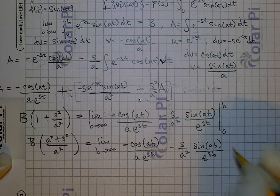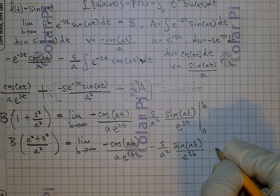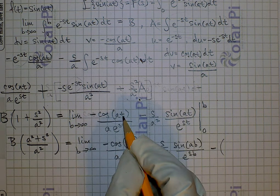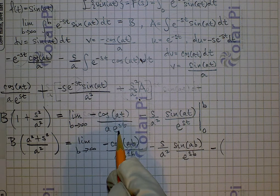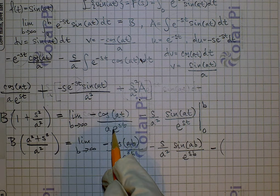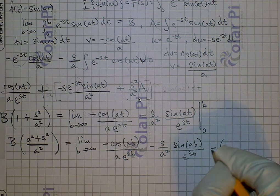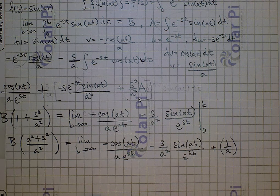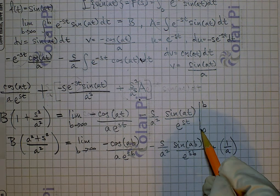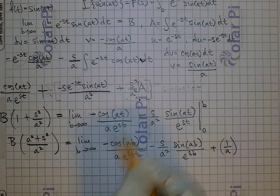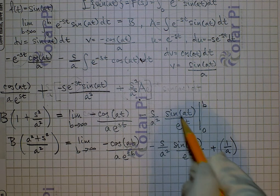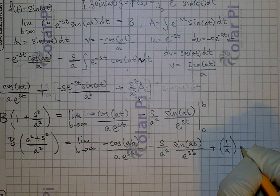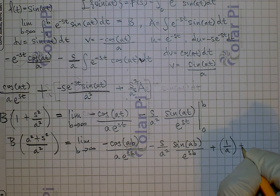Now we plug in zero and subtract. When we plug in zero, we get negative cosine of zero, which is negative one over a times e to the zero — so we get negative one over a. But we have this negative sign, so we write plus one over a. Plugging zero into the sine term gives sine of zero, so everything there turns into zero. So we have plus zero.